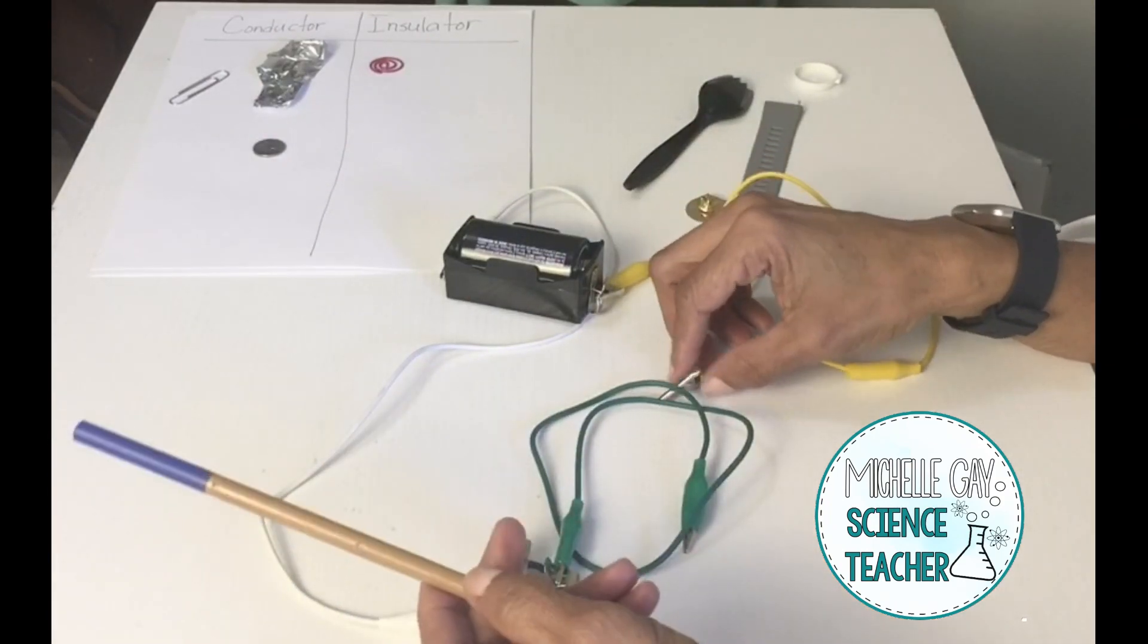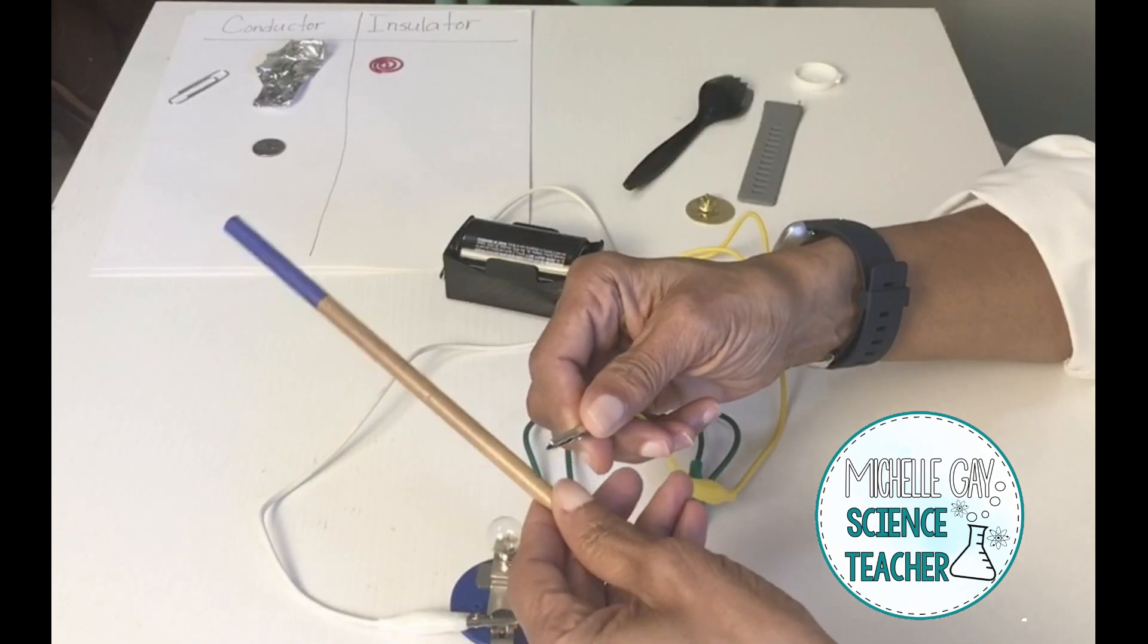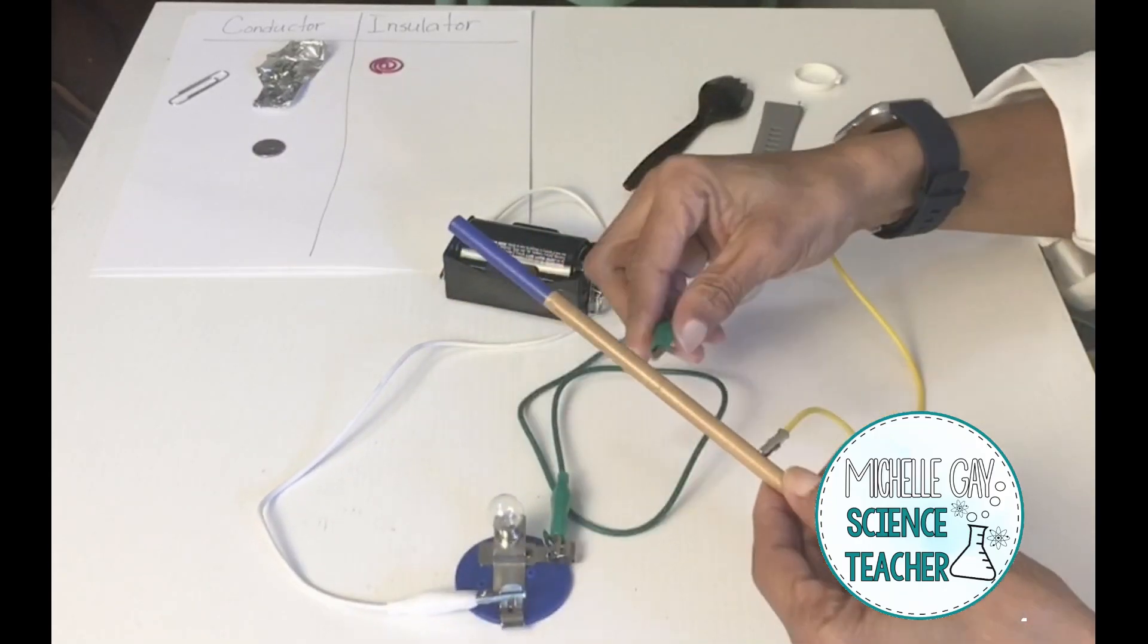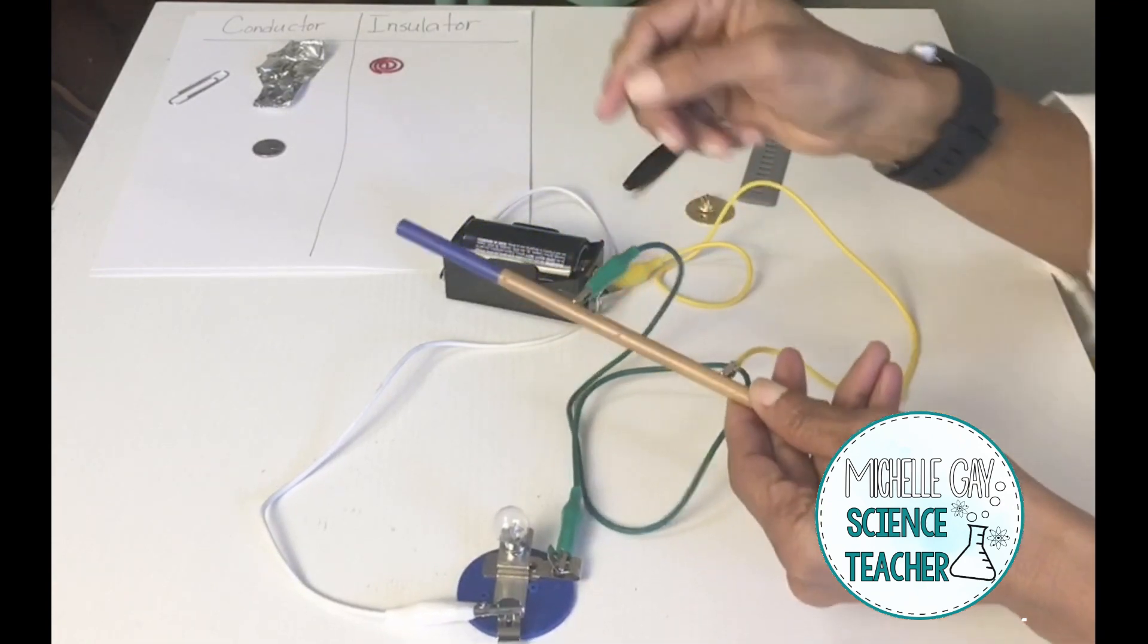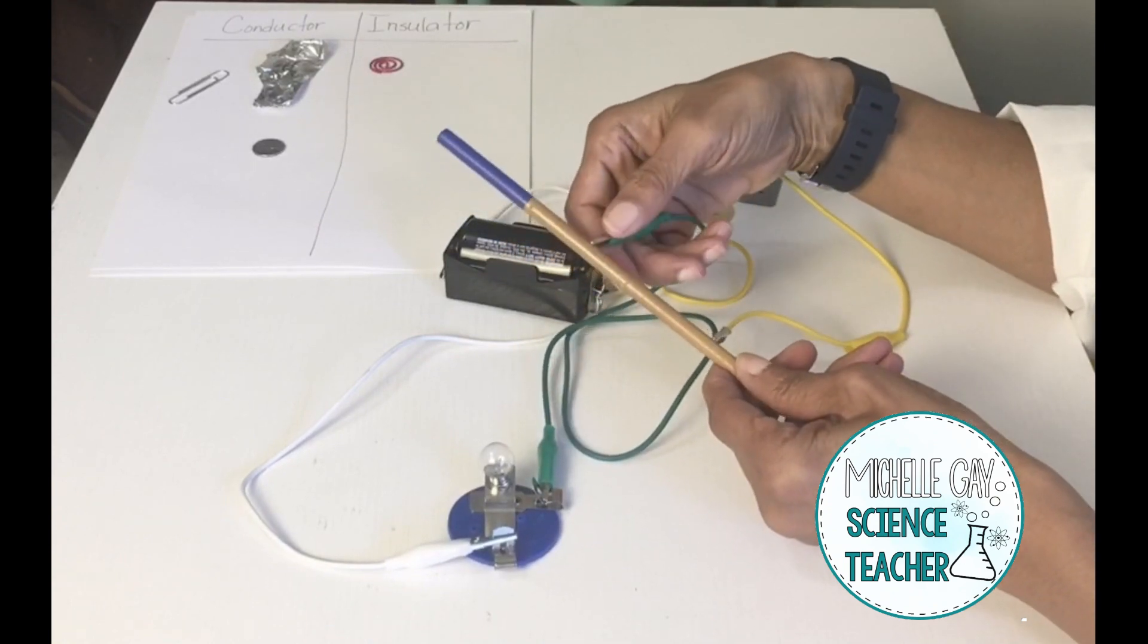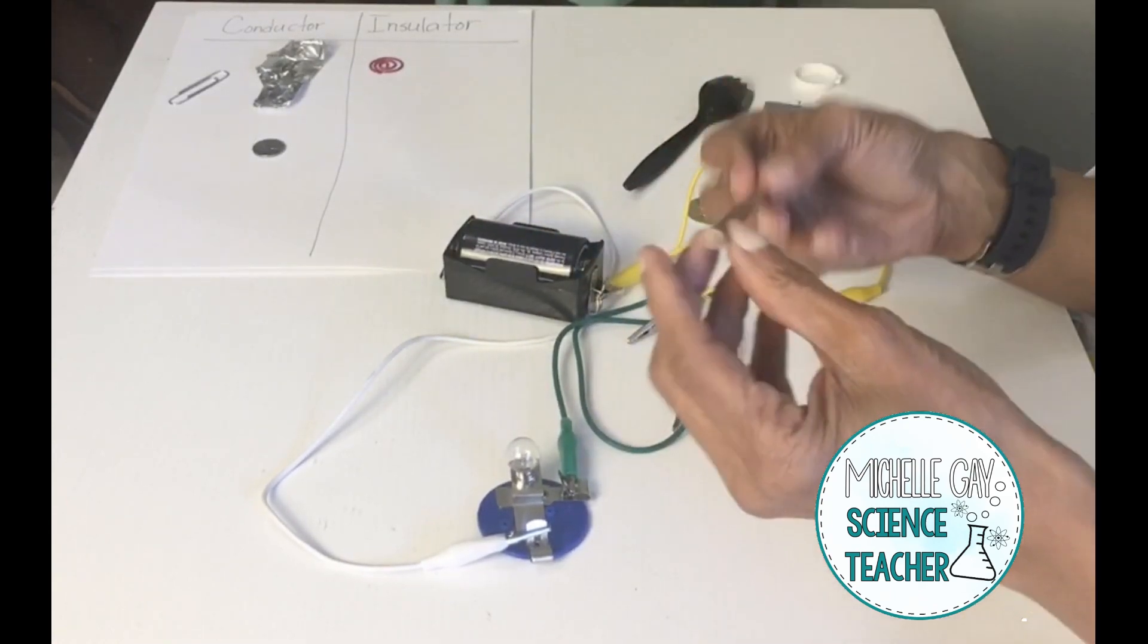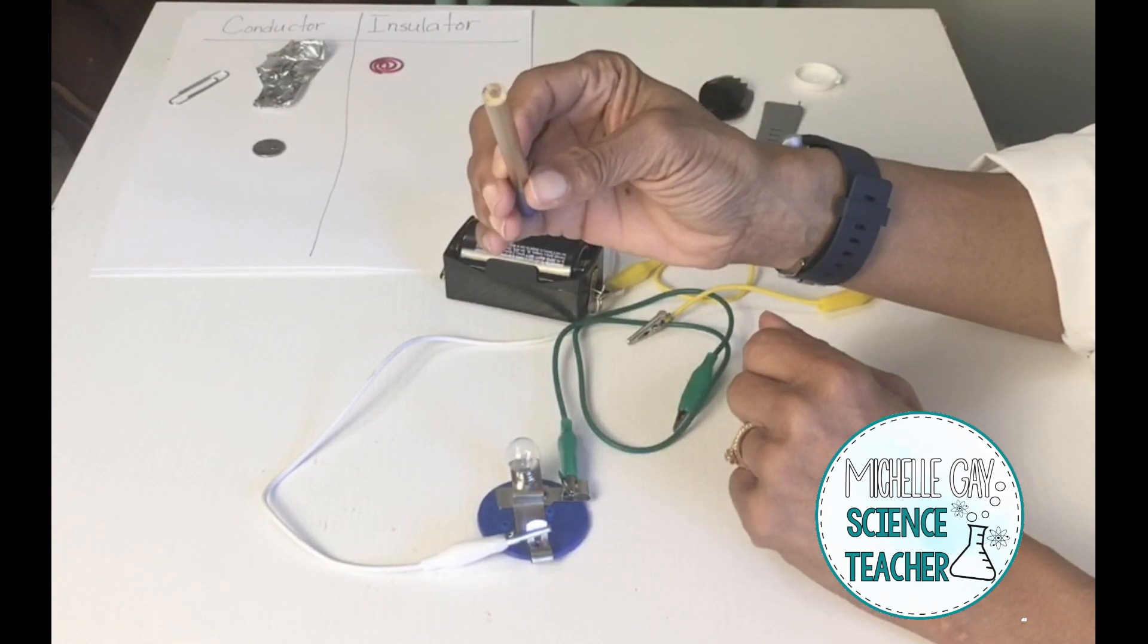Let's test the pencil next. The pencil is made of wood. Is it a conductor or an insulator? If you said an insulator, you are correct. Now the pencil part is made of wood, but on the inside it has lead or graphite. Do you think this part of the pencil would it be a conductor or an insulator?